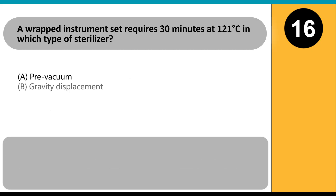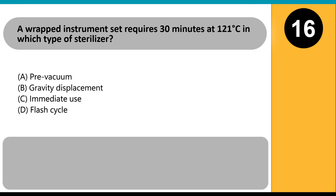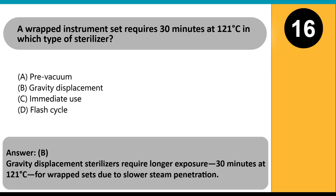A wrapped instrument set requires 30 minutes at 121°C in which type of sterilizer? A. Pre-vacuum. B. Gravity displacement. C. Immediate use. D. Flash cycle. Answer: B. Gravity displacement sterilizers require longer exposure — 30 minutes at 121°C — for wrapped sets due to slower steam penetration.